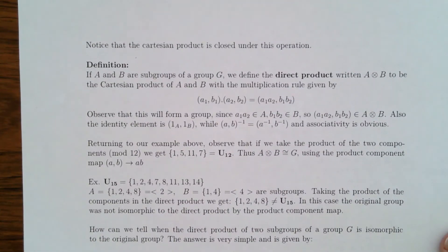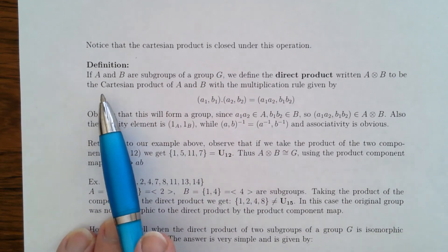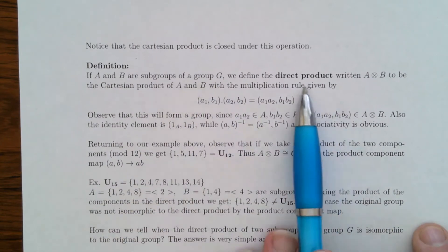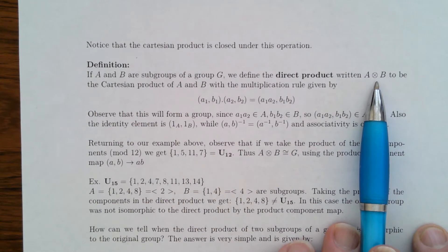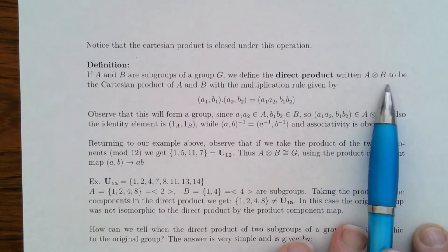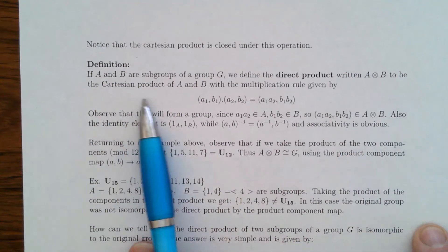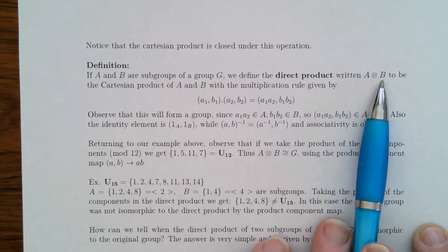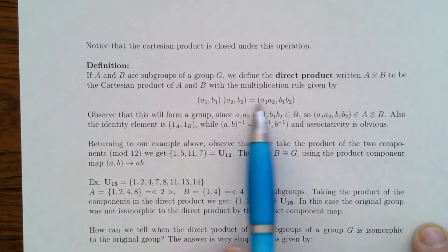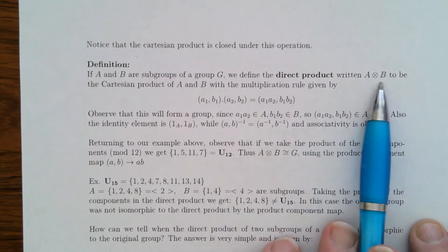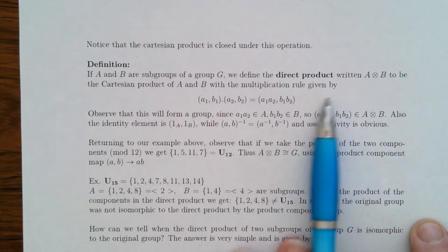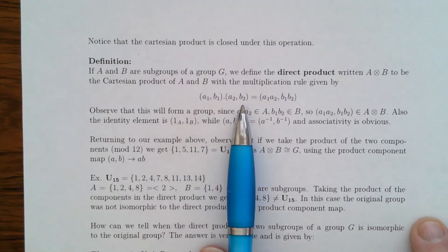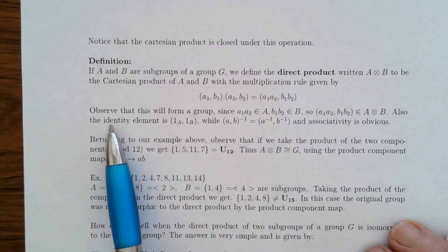Let's make a formal definition. Given two subgroups A and B of G, we define the direct product — written A with a circled cross — to be the Cartesian product A × B, where the circle indicates it has a group structure. The multiplication rule is as we said: to multiply two ordered pairs, multiply them coordinate-wise. This definition can be generalized to more than two subgroups, which we'll look at later.